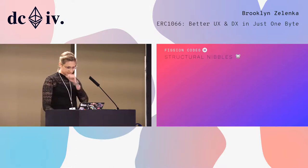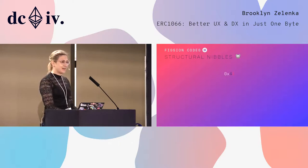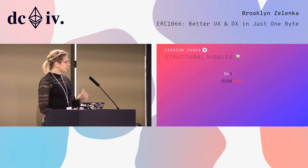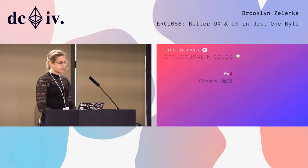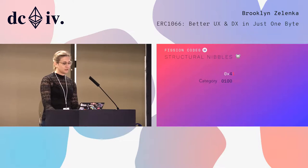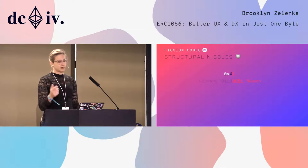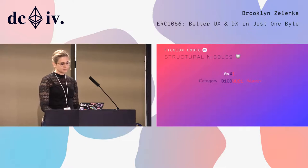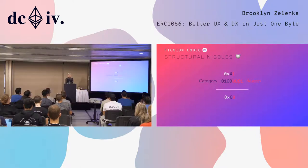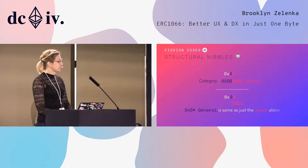Let's talk about the structure and layout. A nibble is a half byte, because programmers in the 70s liked puns. So here's hex 41 — it breaks out like this. The upper nibble is your category, so things like time-based logic or authorization. The lower nibble is the reason — did this pass, did this fail, are we waiting on somebody else, is somebody waiting on you, etc. We get this extra nice property that the general category zero is the same thing as not having the upper nibble at all — it's just the same as the reason alone.